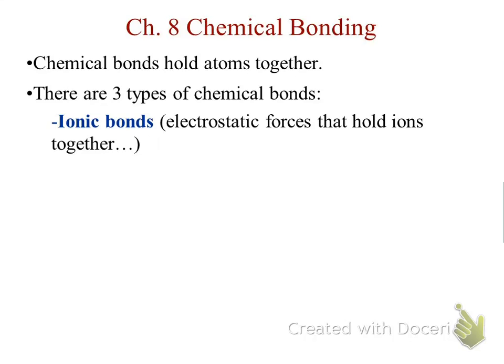Our three types of bonds are ionic, which are held together by electrostatic forces, or the difference in charges. Some of the examples we've used before: sodium chloride, potassium bromide — anything that has a positive and negative charge will usually be attractive.